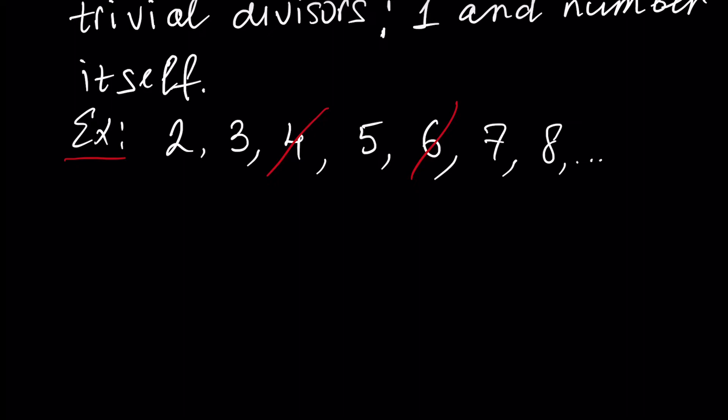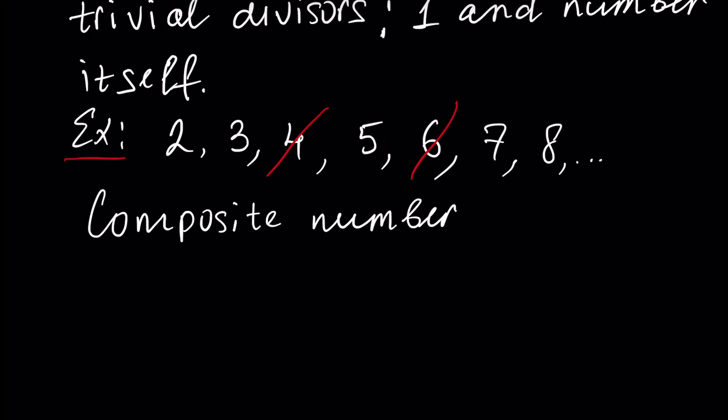Next, let's define what is a composite number. A composite number is a number which is not a prime number. For example, number four is a composite number — beside divisors one and four, it also has a non-trivial divisor: two. Number six is a composite number because beside divisors one and six, it also has divisors two and three. Number eight, as we already know, is also a composite number — it has non-trivial divisors two and four.